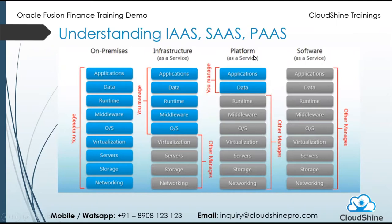PaaS is Platform as a Service. In addition to the infrastructure, the service provider provides you the OS, middleware, and runtime as well — you just need to install your application and your data. In SaaS, the Software as a Service, everything is managed end-to-end by the service provider. You just need to pay the license fee and start using the software straight away. There are no implications and no maintenance costs.